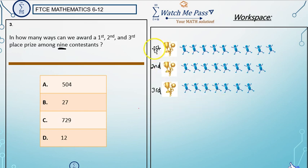So, to win first prize, we have nine contestants at the beginning. One, two, three, four, five, six, seven, eight, nine.